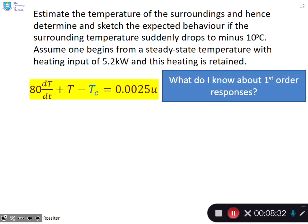Now let's read the second part. Estimate the temperature of the surroundings TE and determine and sketch the expected behavior if the surrounding temperature suddenly drops to minus 10. Assume one begins from a steady state with heating input of 5.2 kilowatts, and this heating is retained.